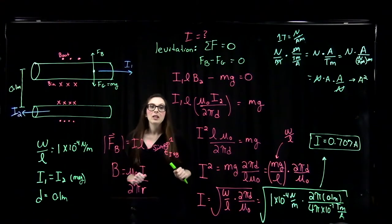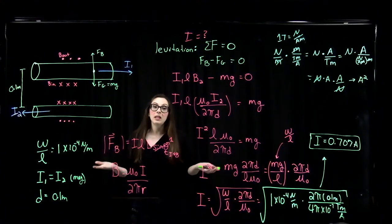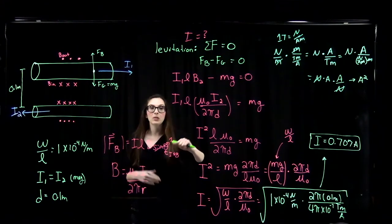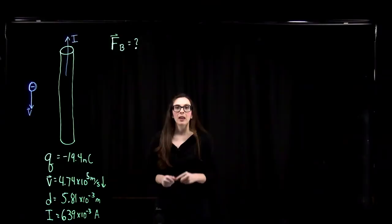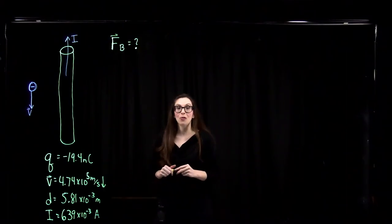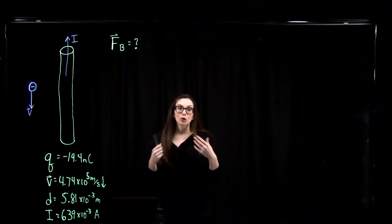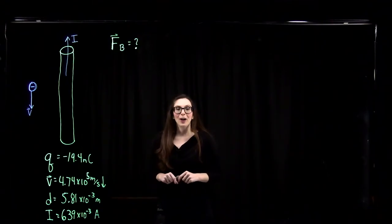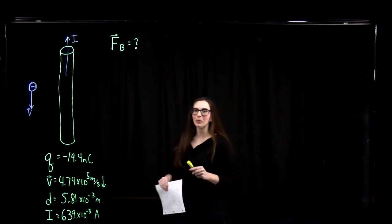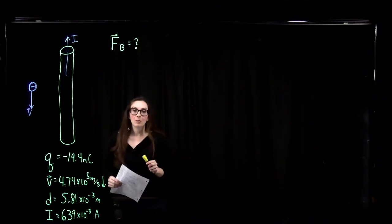That's how you determine what current is needed for two parallel wires to have the top one levitating above the other. In this next problem, we're going to find the magnitude and direction of a magnetic force acting on a charged particle traveling nearby a current-carrying wire, combining multiple principles.